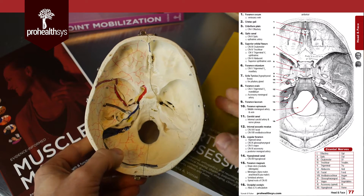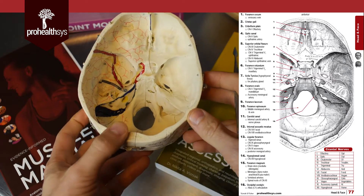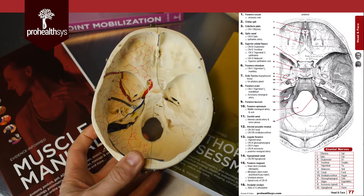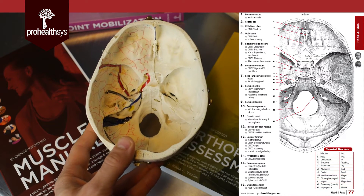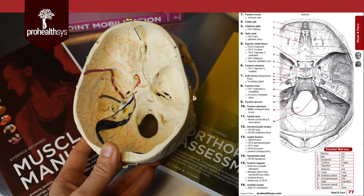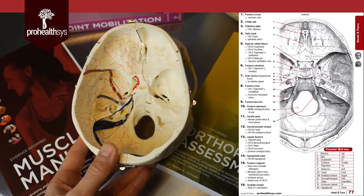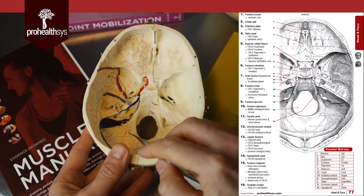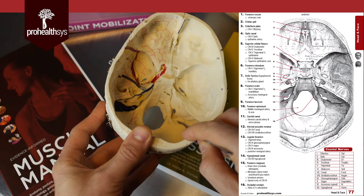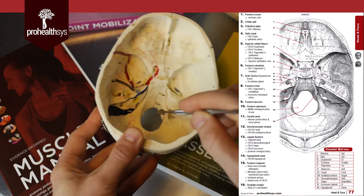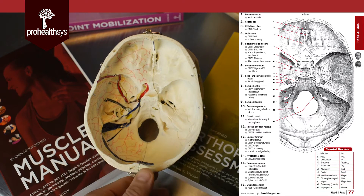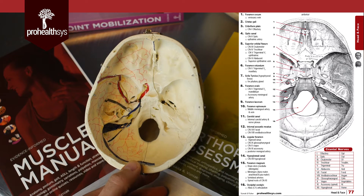The next structure is the hypoglossal canal, for cranial nerve number 12, which supplies the tongue. Interestingly, this skull shows a very common anatomical variation — we can't actually see a clear hypoglossal canal. It sometimes runs as a separate foramen and sometimes doesn't, which is just another example of real-life anatomical variation.